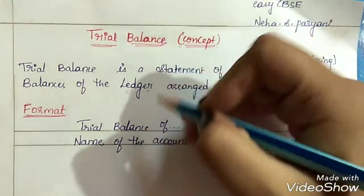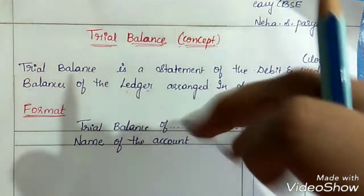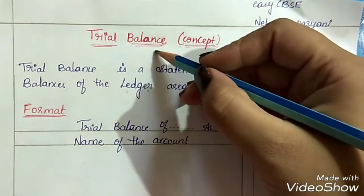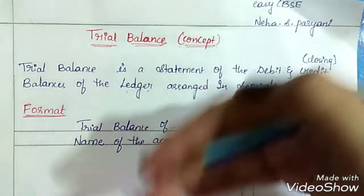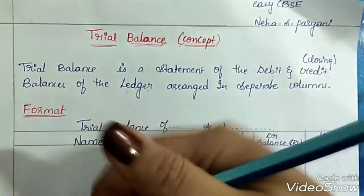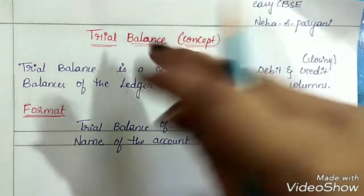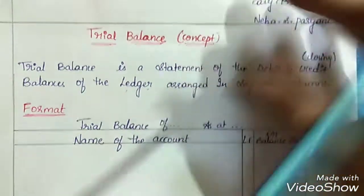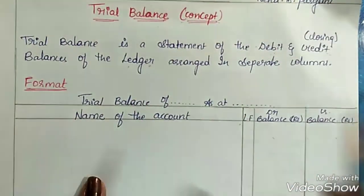Remember, trial balance is the first step for preparing the financial statements of a company. After the preparation of trial balance, various accounts and financial statements are prepared — like trading and profit and loss account, balance sheet, etc. So trial balance will be very useful for preparing the financial statements of the company.